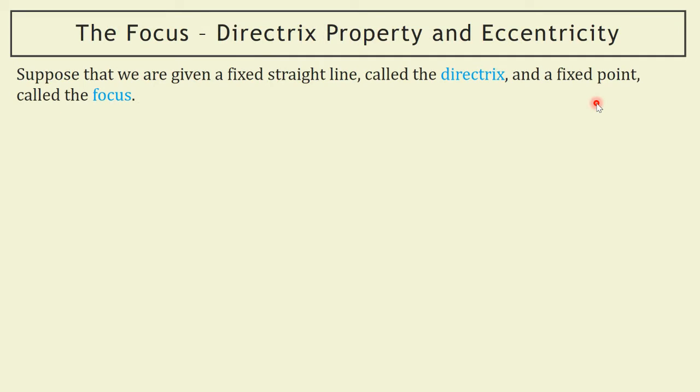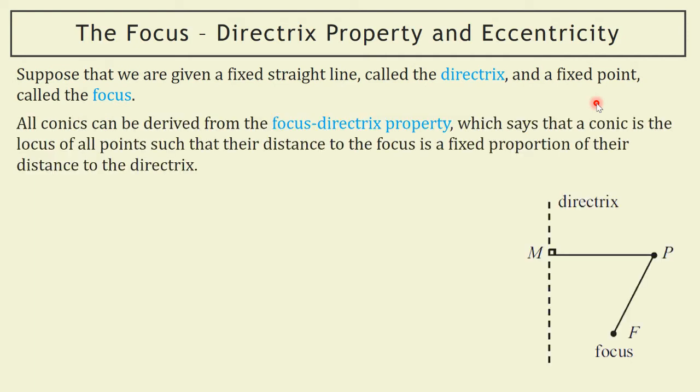Today we're going to look at the focus-directrix property again, which we looked at for the ellipse. We've got this fixed straight line called the directrix and this fixed point called the focus. The focus-directrix property defines all conics — as well as thinking about the cone, this property defines all conics by this ratio called the eccentricity. It says that a conic is the locus of all points such that their distance to the focus is a fixed proportion of their distance to the directrix, and that fixed proportion is the eccentricity.